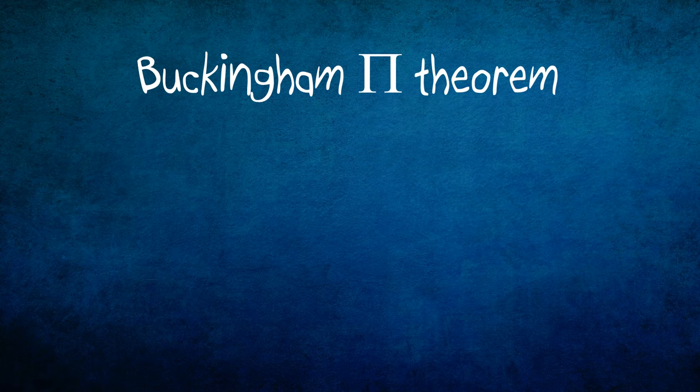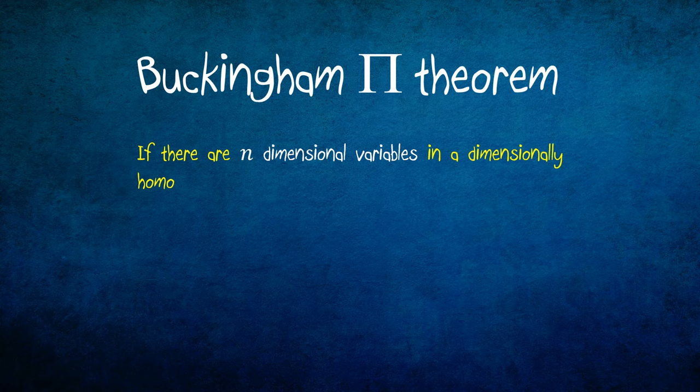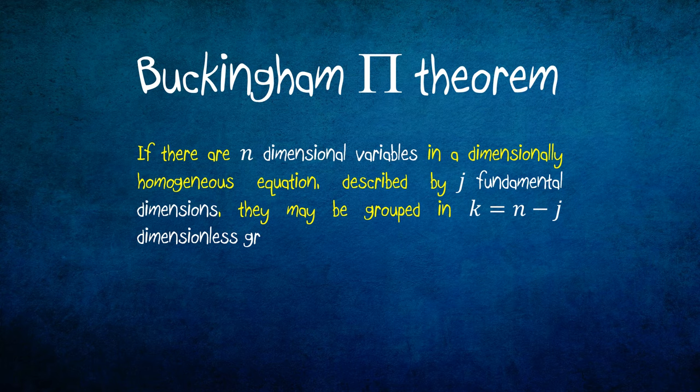It states that if there are n dimensional variables in a dimensionally homogeneous equation, described by j fundamental dimensions, they may be grouped in k equals n minus j dimensionless groups.